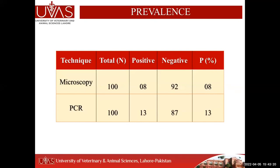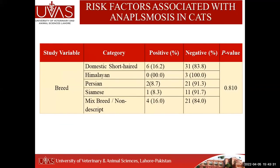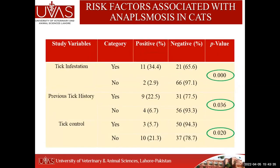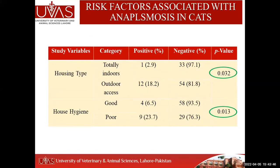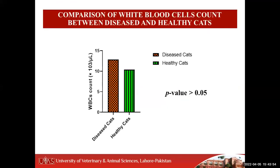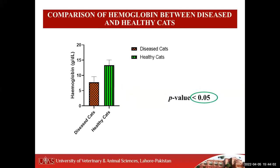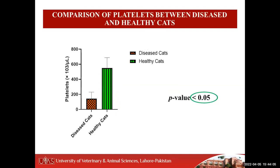In Pakistan, on the basis of microscopy we found 8 out of 100 samples positive, while 13 out of 100 were positive by PCR for anaplasma infection. Among risk factors analyzed — breed, sex, age — three factors were found significantly associated: tick infestation, previous tick history, and tick control. Housing type and house hygiene were also found significantly associated. Hematologically, WBC count was increased but non-significant, while red blood cell count, hemoglobin, packed cell volume, and platelets were significantly decreased in infected cats.